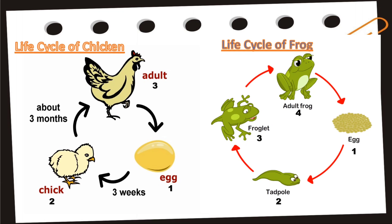Next, we have the life cycle of the chicken. The first stage is the egg. After three weeks, it will become a chick. In about three months, it will become an adult chicken.